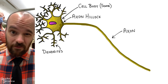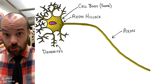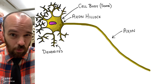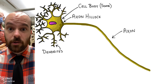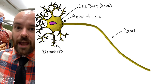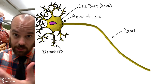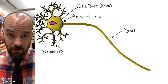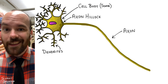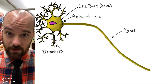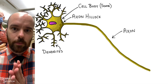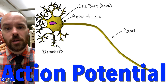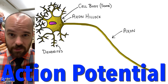The axon hillock is the site where the neuron decides whether to send a signal or not. Information comes in from the dendrites — some excitatory, telling the neuron to fire, some inhibitory, saying don't send a signal. It's a tug of war, and whichever side wins determines if a signal gets sent down the axon. That signal is called an action potential, which we'll cover in depth in another video.